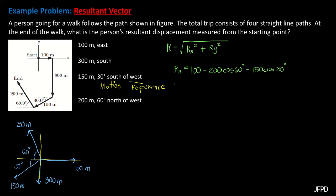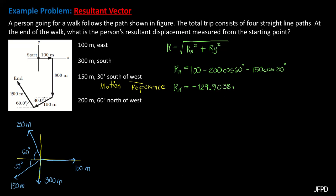Inputting this equation on the calculator gives us a value of Rx = −129.9038 meters.